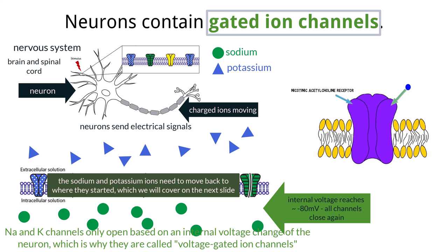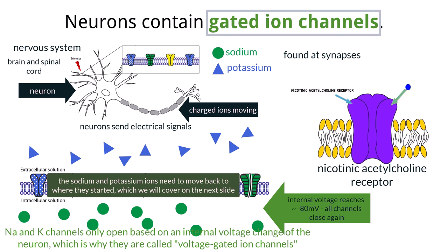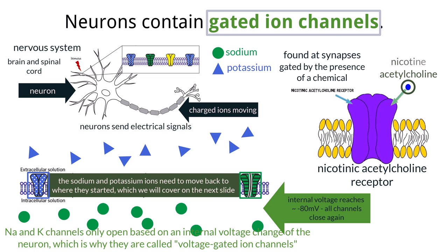In addition to the sodium-potassium voltage-gated ion channels of the neuron, you also need to know about nicotinic acetylcholine receptors. These receptors exist at a synapse — a small space between two neurons in which chemicals can be passed. It's important to note that this receptor is not gated by internal voltage like the sodium and potassium channels, but by the presence and attachment of a chemical. In this case, the neurotransmitter acetylcholine can bind to it, in addition to the chemical nicotine, hence the name nicotinic acetylcholine receptor.